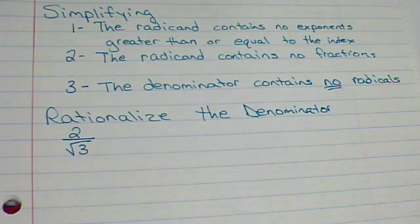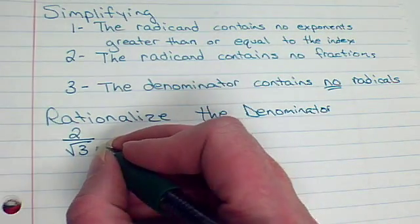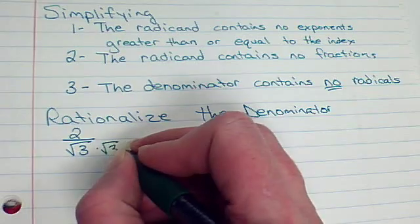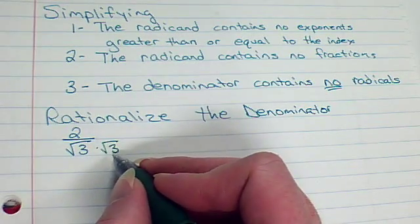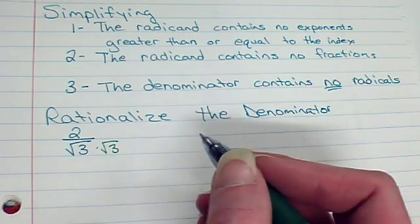And, if you think about what we look for, we look for perfect squares. So, if I multiply that by the square root of 3, the square root of 3 times the square root of 3, we're going to be the square root of 9, which would just be 3. So, that's nice.